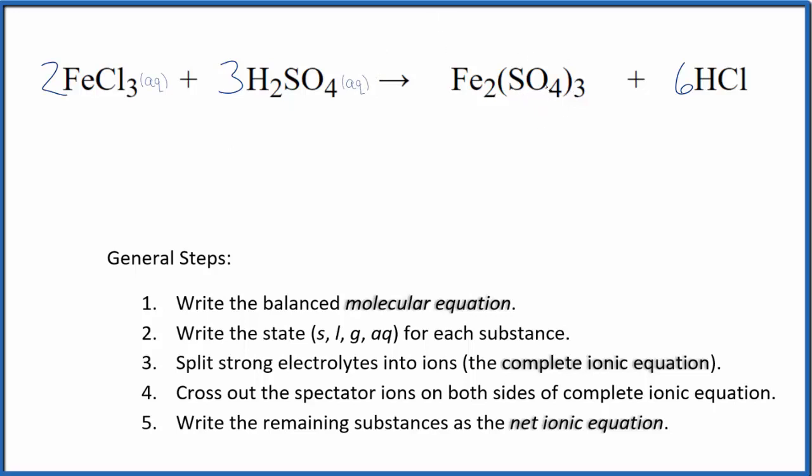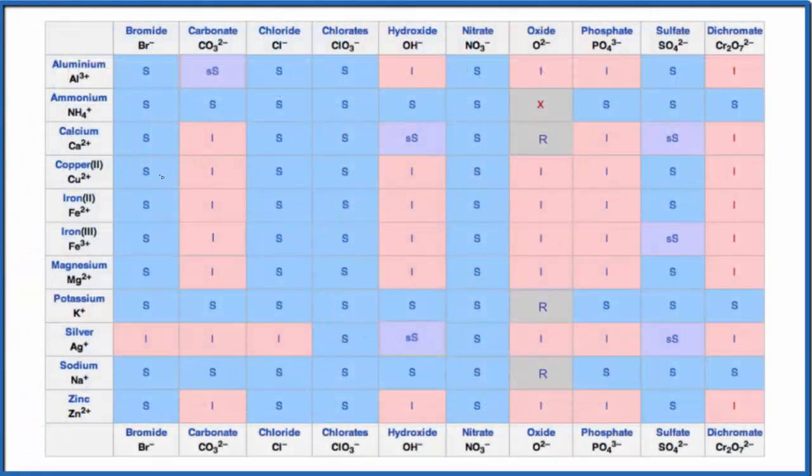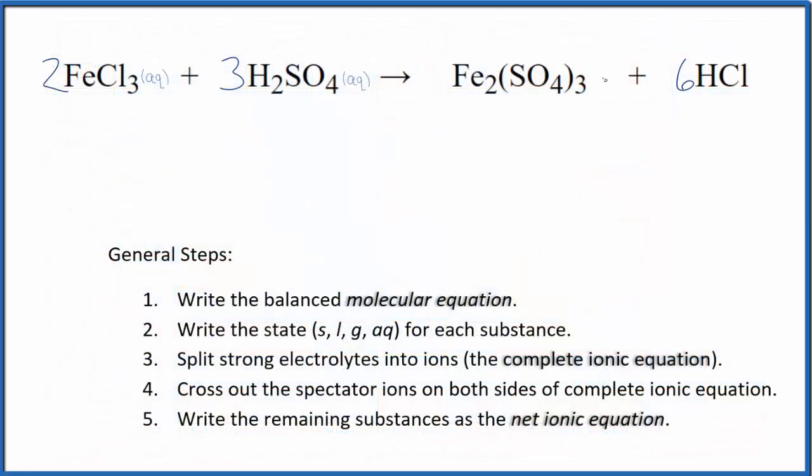And then in general, sulfates are soluble, but let's look this one up. This might be a special case. So we're looking up the iron(III) ion right here, and then the sulfate right here. So if we go over and down, we get this SS, slightly soluble. That means most of it will be insoluble. A little bit will dissolve. For the purpose of net ionic equations, we consider slightly soluble to be insoluble. So our iron(III) sulfate here is going to be insoluble. That means it's going to be a solid.